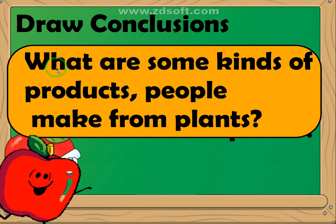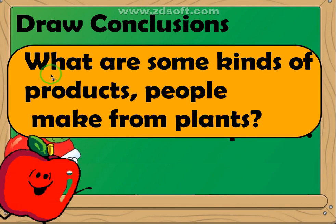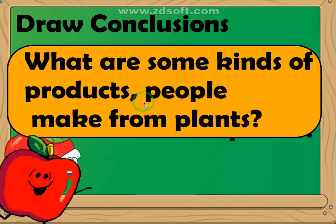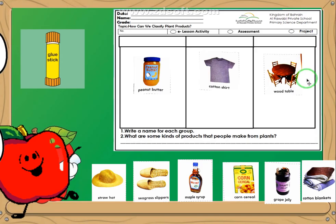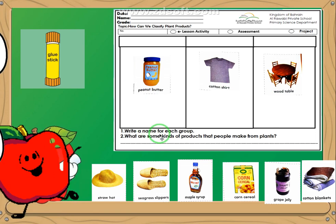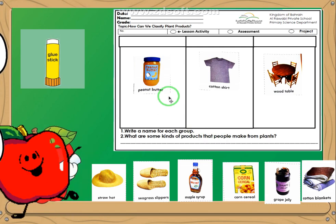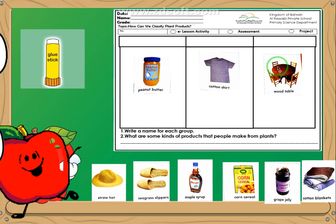So, the question is: What are some kinds of products people make from plants? Read with me. Go back to your picture and try to think about what are some kinds of products people can make from plants. These products we use for — what about these products here? And what about these products here? I know you can do this by yourself.